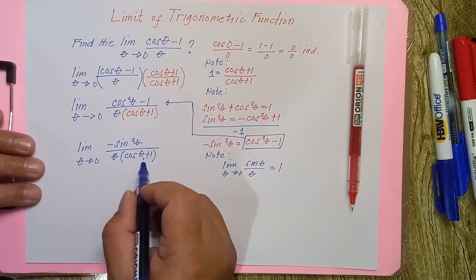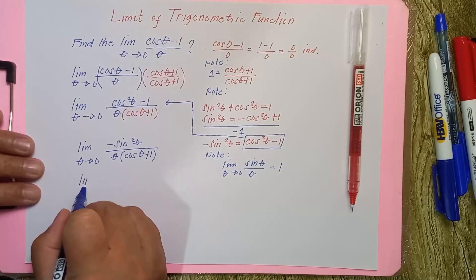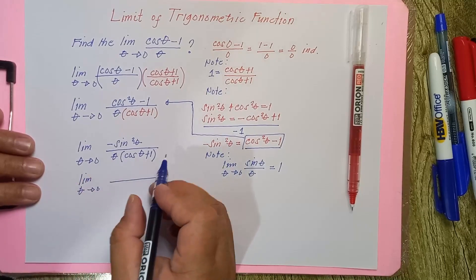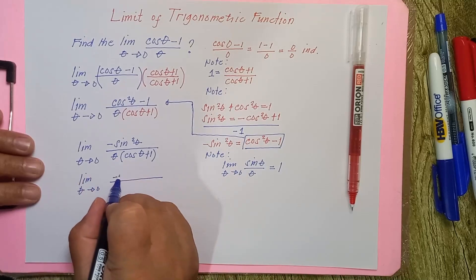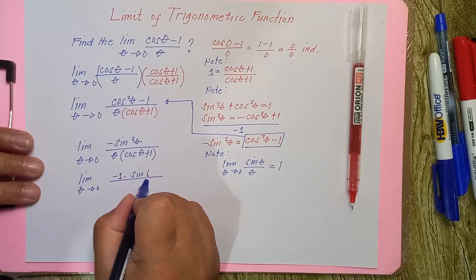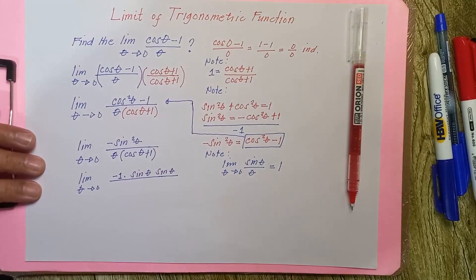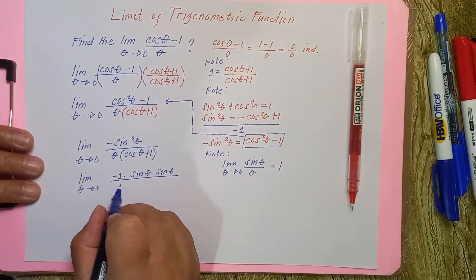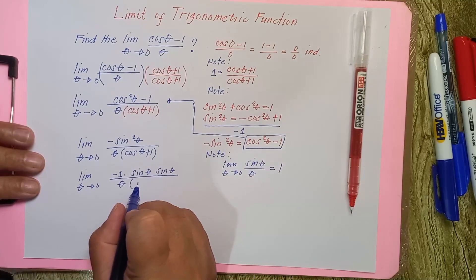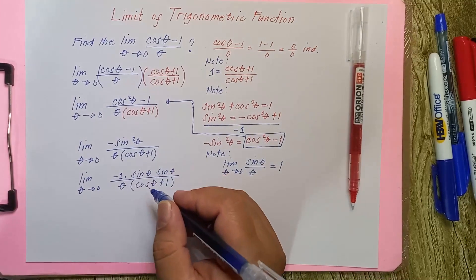Since both the numerator and denominator are in product form, we can factor. The factored form of the numerator is: negative 1 multiplied by sine theta multiplied by sine theta. The denominator remains theta multiplied by (cosine theta plus 1), as theta approaches 0.